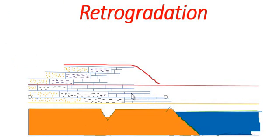While in progradation, terrestrial species move toward sea.